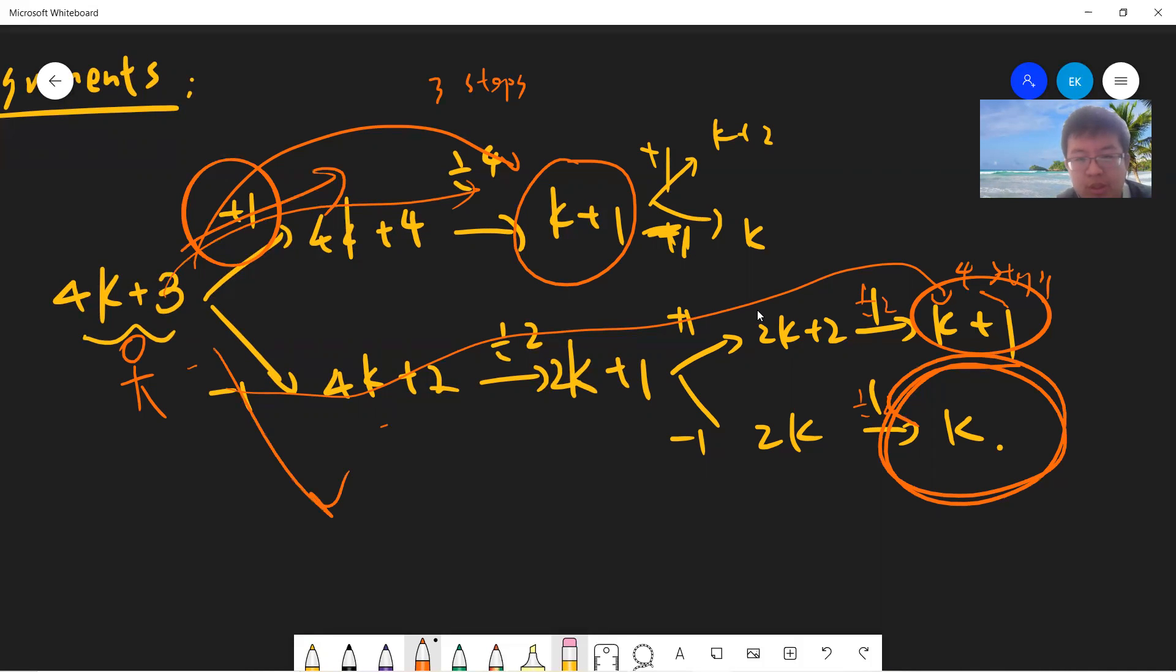You need this, this, this, this, and so you need four steps to arrive k. But also for this one, it takes four steps. So mathematically, then you should take the upper one, because in average case, the upper one is better. Yeah, so this is the proof.